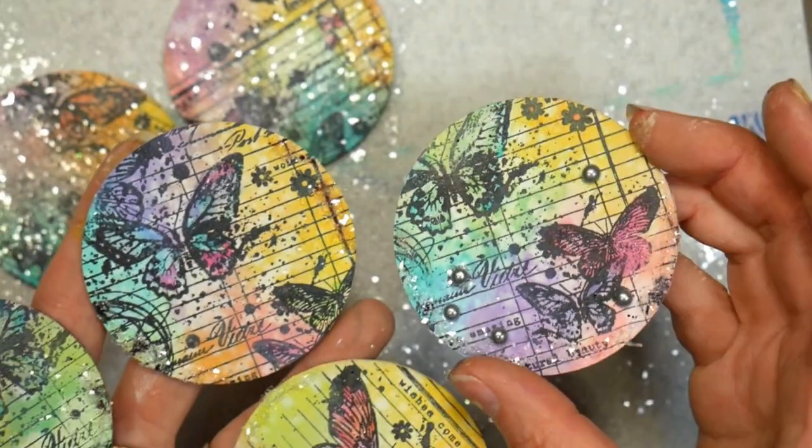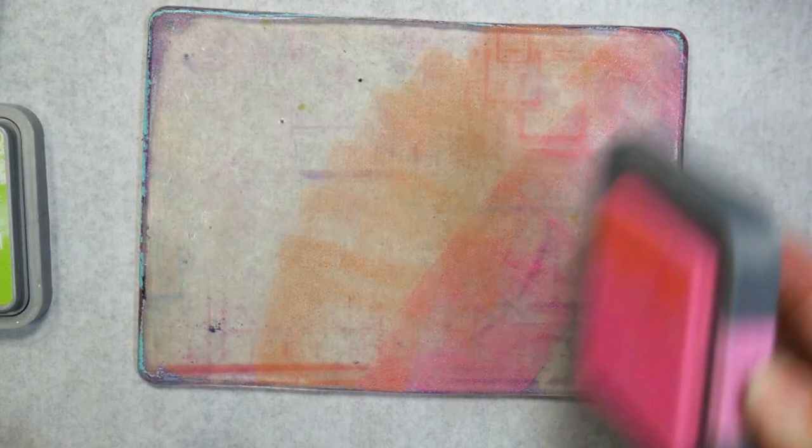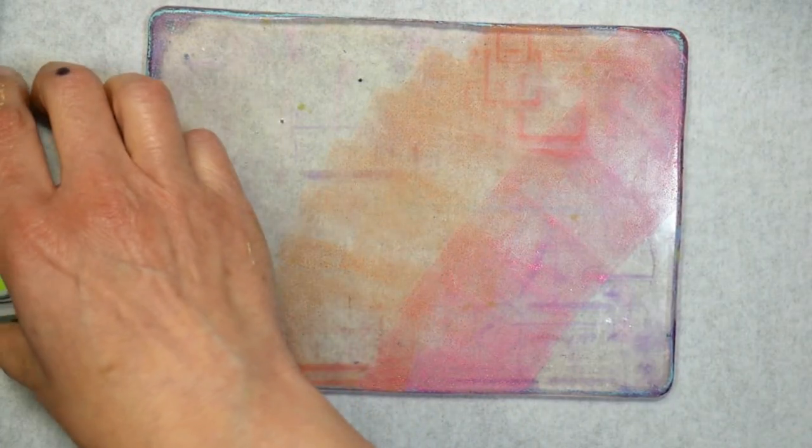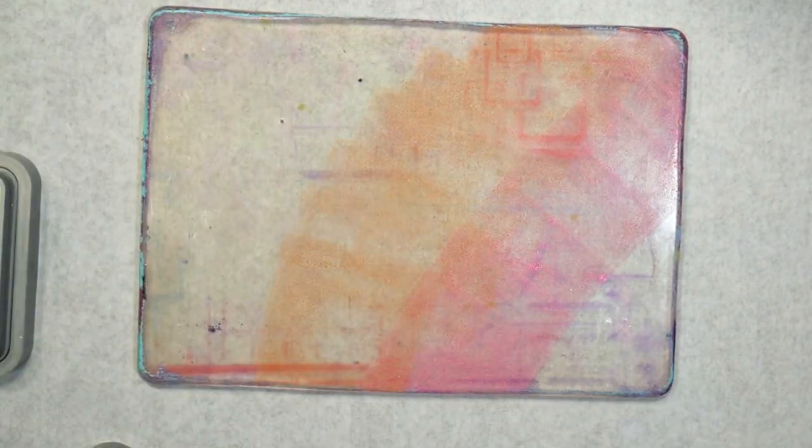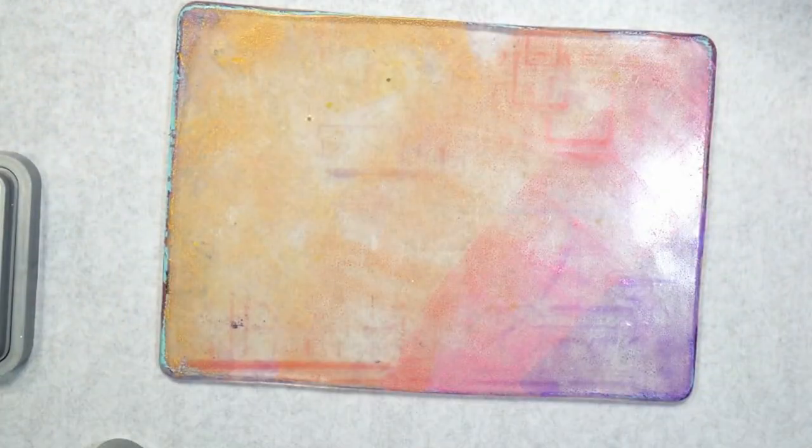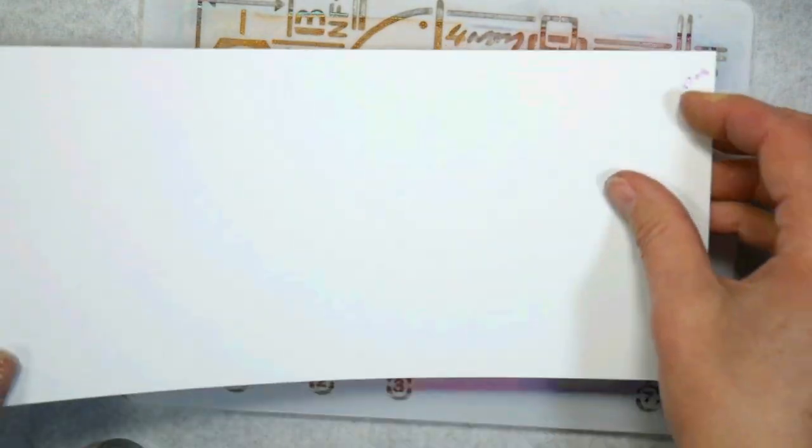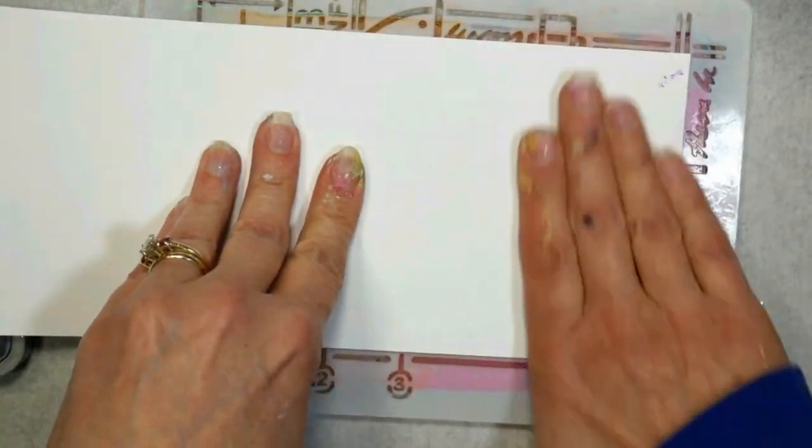I set these aside to dry and decided to work on some customized backings for my artist trading cards. Since I've been obsessed with my jelly plate lately, I decided to use the same distress oxide colors I used on the fronts to embellish the paper for the back.